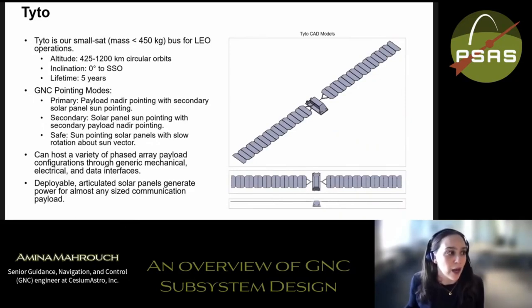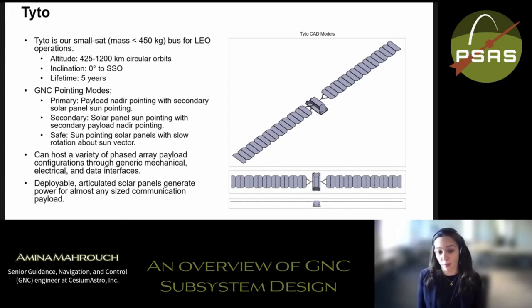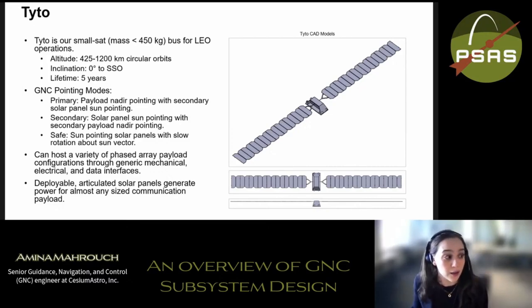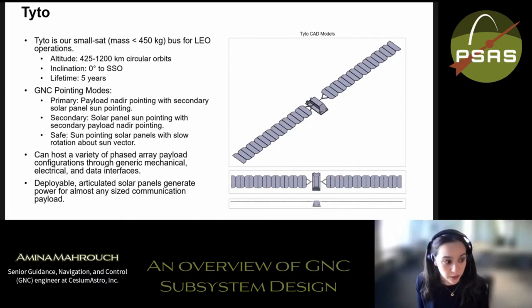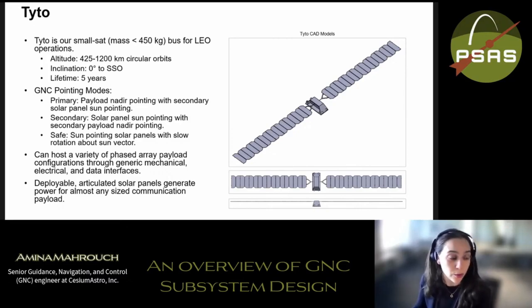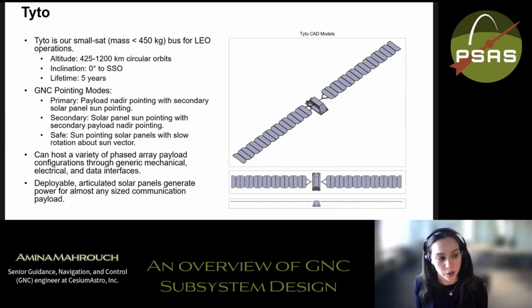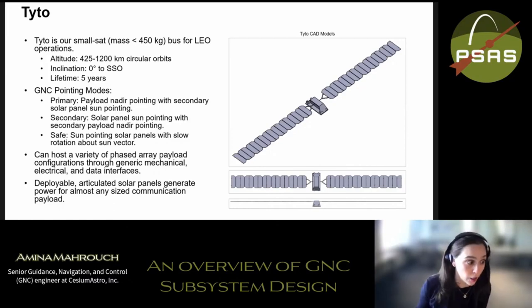Many programs are driven by high-level requirements to identify what you're trying to achieve. Since we are our own customer, we don't have an external customer specifying exactly what we need. Instead, we got an objective: design an affordable LEO spacecraft that can host a variety of Cesium communication payloads, have rapid turnaround, and demonstrate inter-satellite communications. Building from that objective, the team scoped the vision to create initial level-one requirements — including bounding the orbital definitions. We will design a spacecraft able to operate between 425 and 1200 km circular orbit, at any inclination between zero degrees and sun-synchronous, and survive for five years.